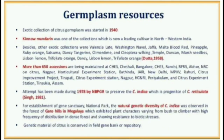Germplasm Resources: Exotic collection of citrus germplasm was started in 1940. Kino mandarin was one of the collections which is now a leading cultivar in northwestern India. Besides, other exotic collections were Valencia Late, Washington Navel, Jaffa, Malta Blood Red, Pineapple, Ruby Orange, Satsuma, Clementine, Cleopatra, Wilking, Temple, Duncan, March Seedless, Lisbon Lemon, Trifoliate Orange, and Dancy. More than 650 accessions are being maintained.